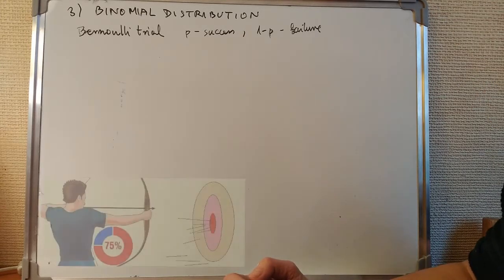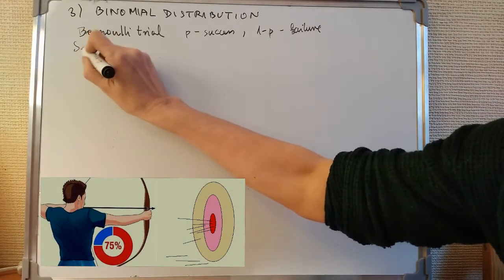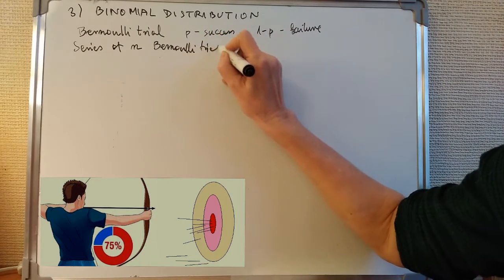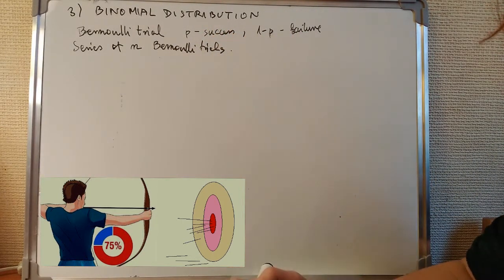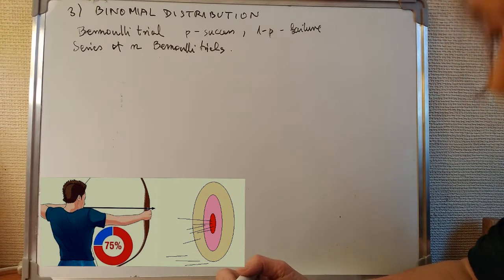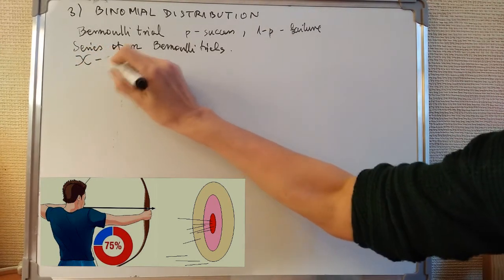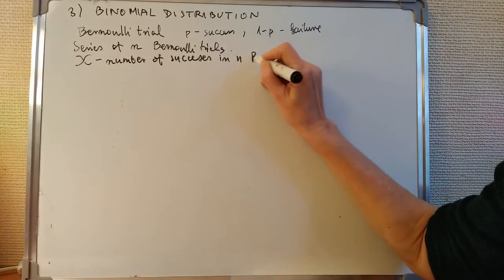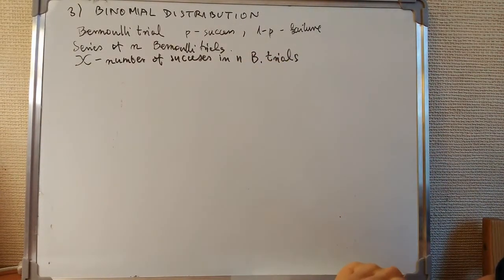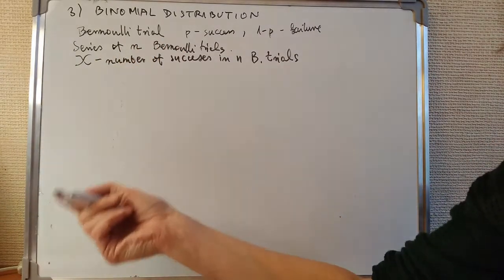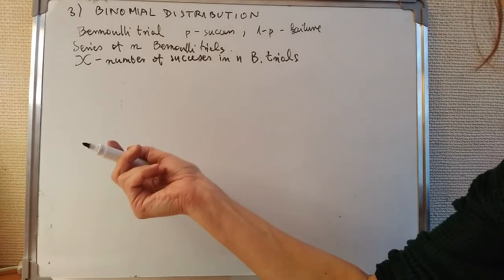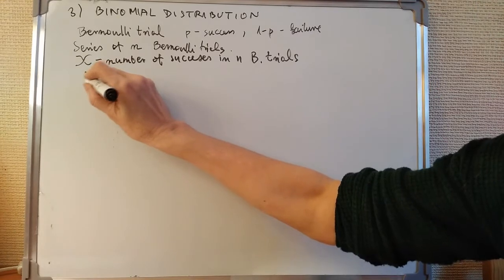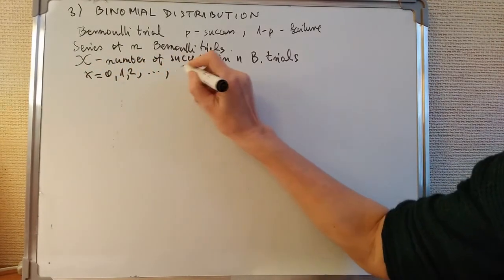Now let's assume we have a series of Bernoulli trials. Each time we have either a success or a failure. Let X denote the number of successes in n Bernoulli trials. This number can range from zero — if we get no successes — up to a maximum of n, if every trial is a success. So X can be 0, 1, 2, and so on until n.